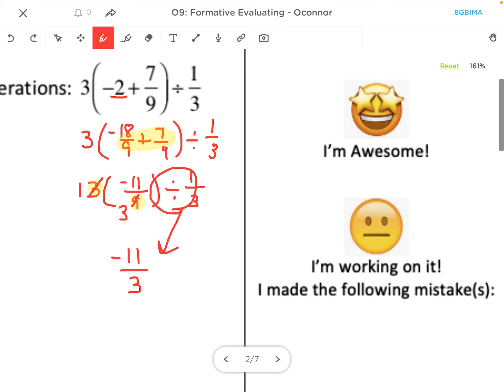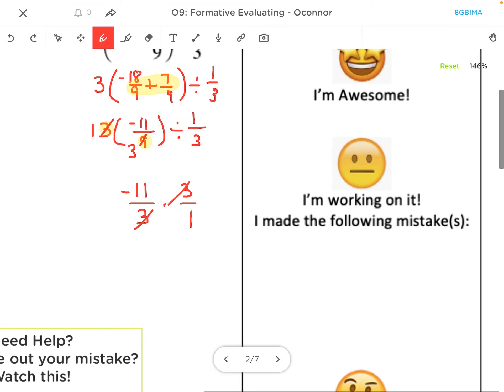Now this multiplication, I can flip over the right-hand side. I'm sorry, this division, I can flip over the right-hand side and make it multiplication. So then I'm going to do times 3 over 1. Then again, reducing and canceling both of my 3s, my final answer is negative 11.